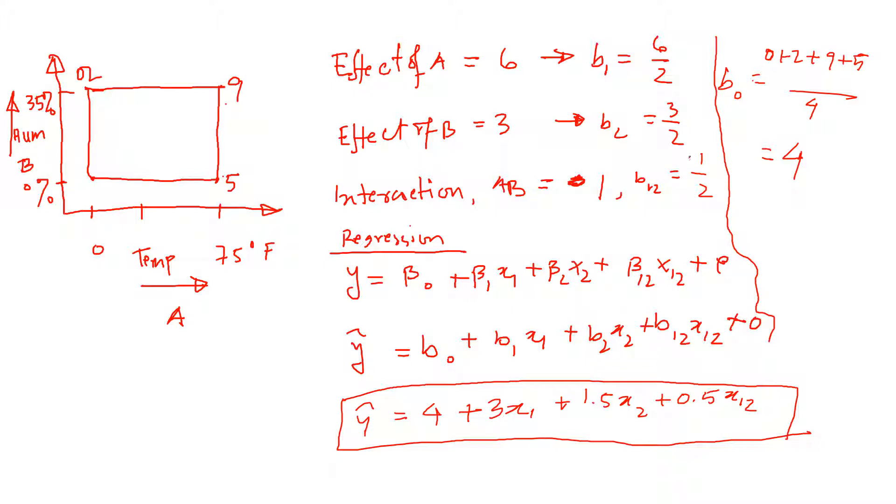Now if you want to calculate B0, the intercept value, B0 basically is the average of all of these values. So B0 is basically 0 plus 2 plus 9 plus 5 divided by 4. We added 4 numbers, the average of 4.